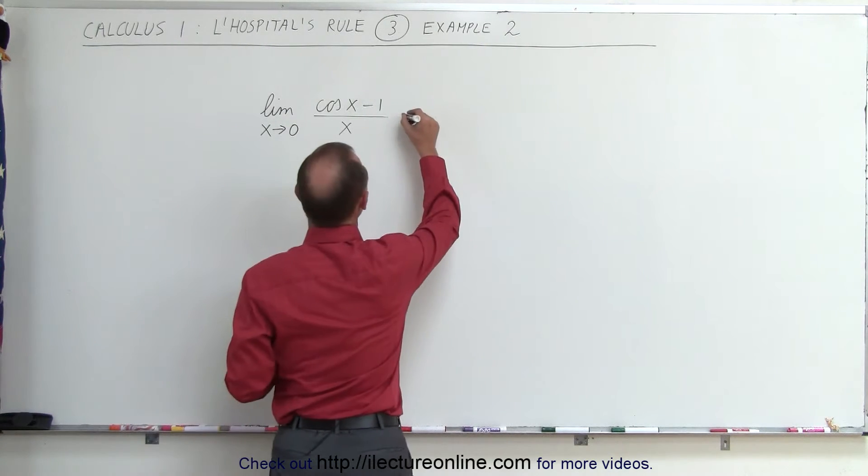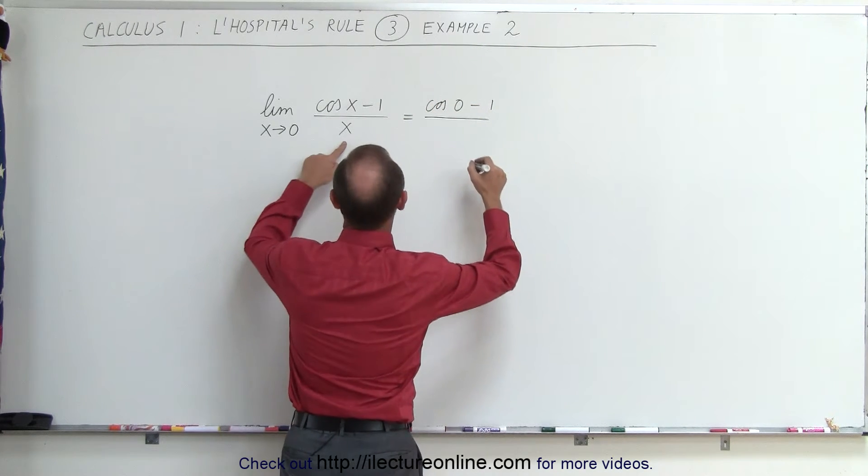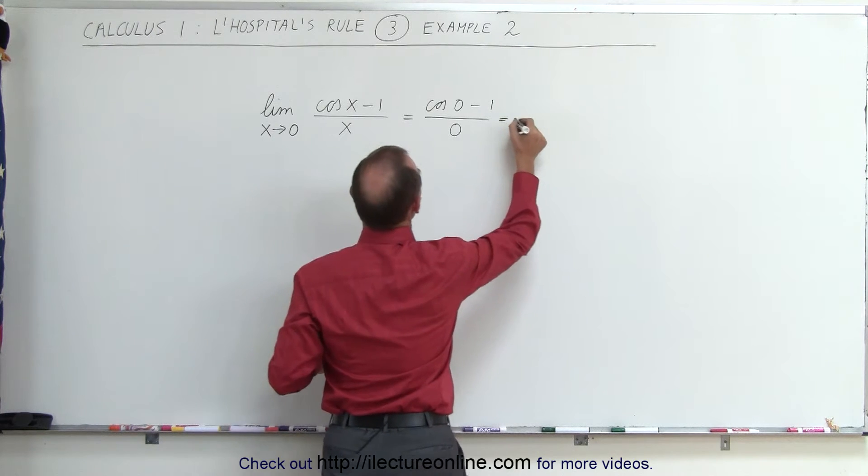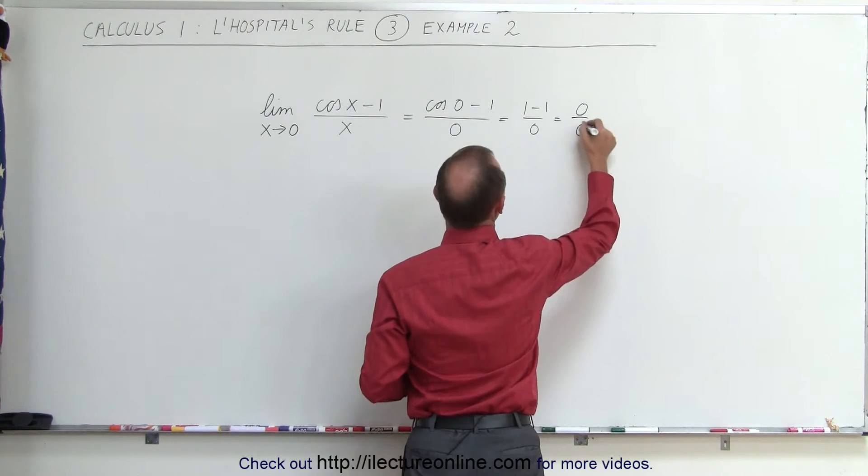So this would be equal to the cosine of 0 minus 1 divided by, when we plug in, that would be 0 as well. So this is equal to the cosine of 0 is 1, minus 1 divided by 0, which is 0 divided by 0.